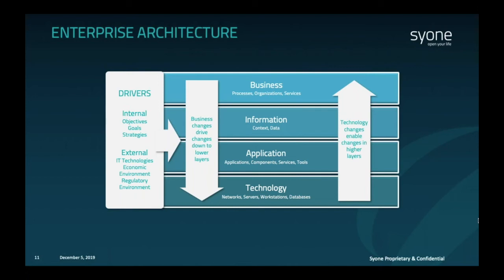The next layer defines the data elements used by the company, from a conceptual view to a more physical approach. By conceptual, we mean the identification of the entities and attributes involved in the company's processes and services. The next layer is the application layer, which maps application structure, its components, services, as well as tools used. And for the last layer, we have the technology layer, where we map network, servers, workstations, databases, and many other technological components.